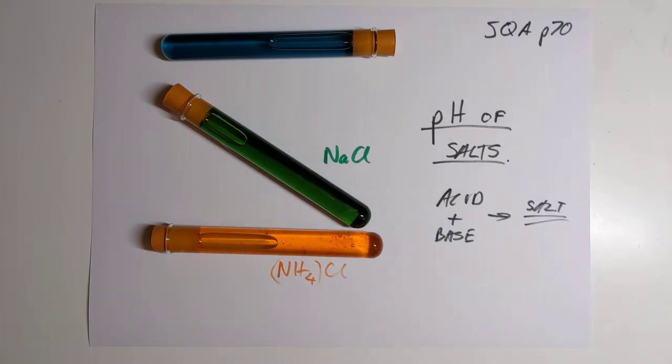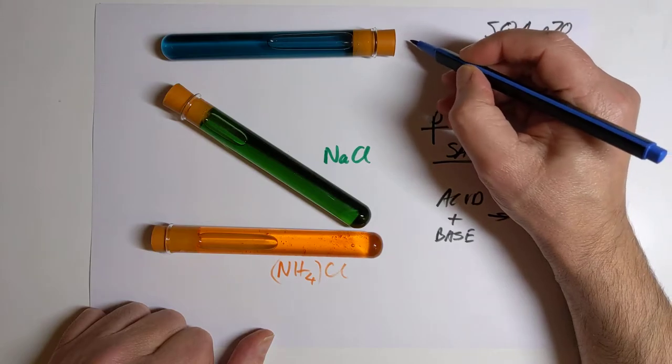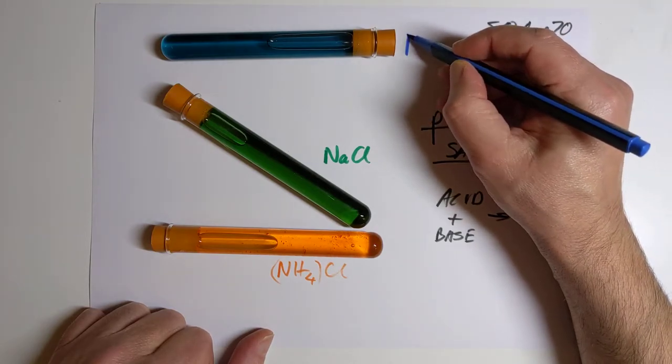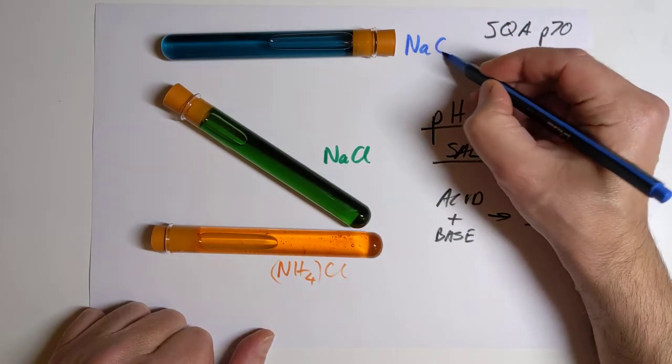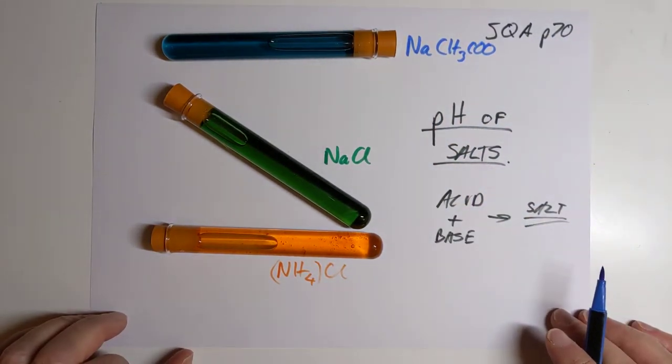because we're usually dealing with strong acids where there's loads and loads of hydrogen ions simultaneously available. Up here at the top in light blue, we have got sodium ethanoate. So CH3COONa, so beloved of cheap salt and vinegar crisps.